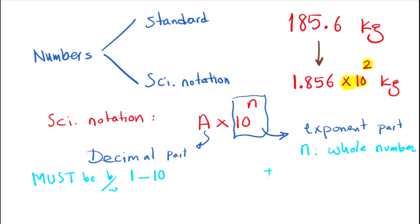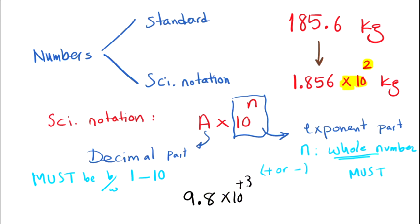Let's work on some examples to see whether they are scientific notation numbers or not. Take 9.8 times 10 to the positive 3 — this is an example of scientific notation, because the decimal part, 9.8, is a number between 1 and 10, and the exponent part, 3, is a whole number. Both conditions are confirmed.